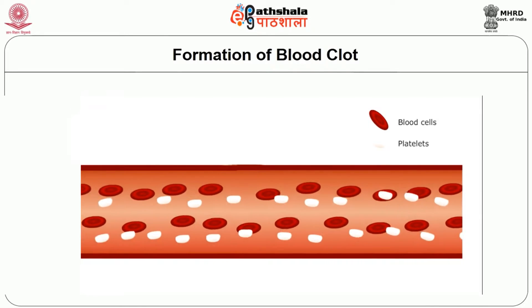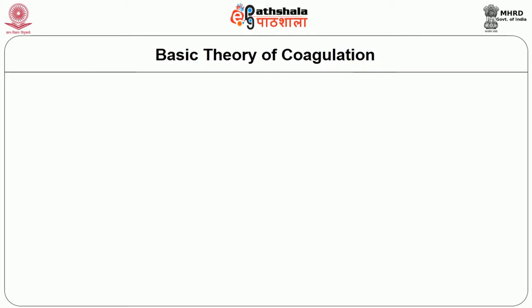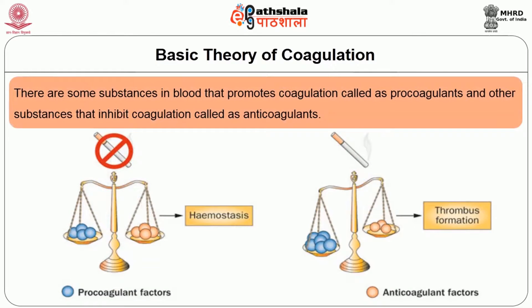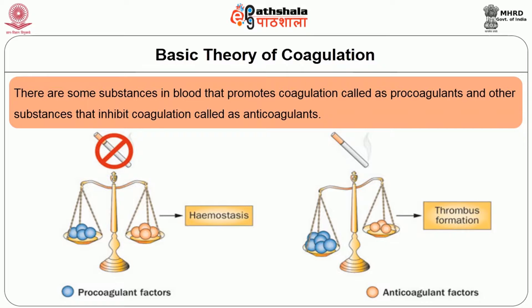Why does blood normally not clot within the vessel wall? There are some substances in the blood that promote coagulation, called pro-coagulants, and others that inhibit coagulation, called anti-coagulants. Normally, the balance between pro-coagulants and anti-coagulants maintains the blood in a liquid state, facilitating circulation. In the blood, anti-coagulants are normally predominant, which is why blood does not clot. If there is injury, pro-coagulants get activated at the site and a clot forms.